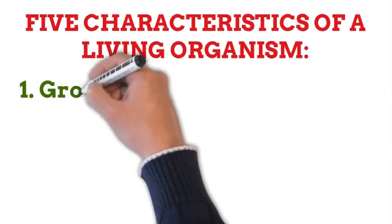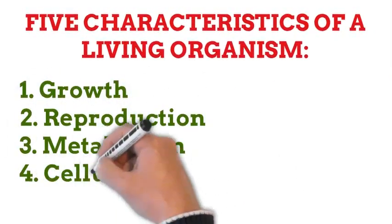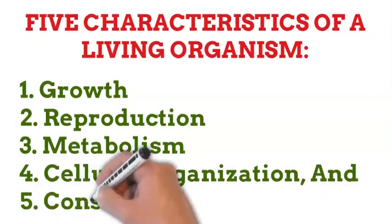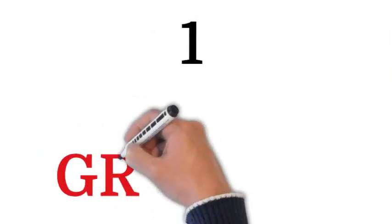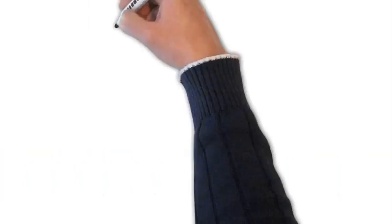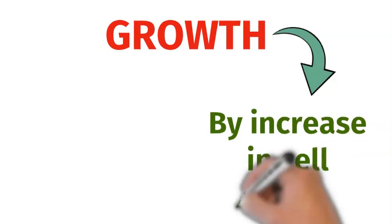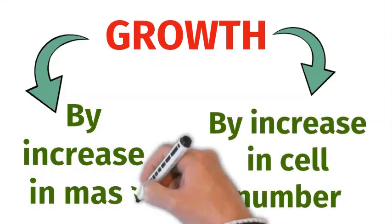The characteristics of a living organism are growth, reproduction, metabolism, cellular organization, and consciousness. Let's discuss the first characteristic, that is growth. Growth of an organism takes place in two ways: one by increase in cell number, and another by increase in mass.